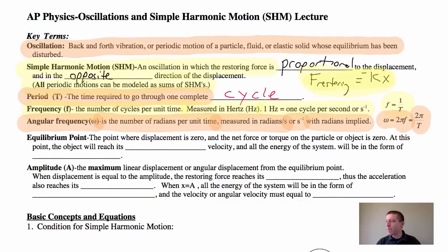The equilibrium point. Next concept here, equilibrium point. This is the point where the displacement is zero and the net force or net torque on a particle or object is zero. At this point, the object will reach its greatest velocity. At the equilibrium point, that's where the object is going to have the highest velocity, and all the energy of the system will be in the form of kinetic energy.